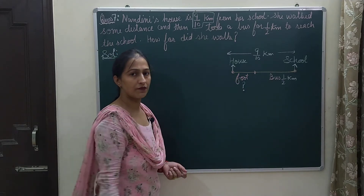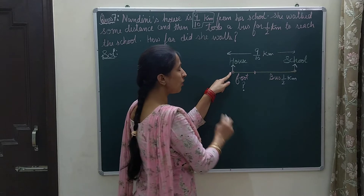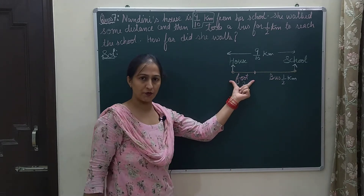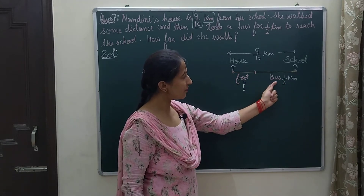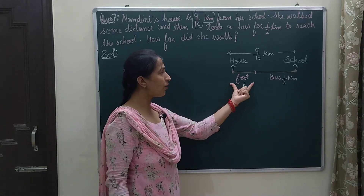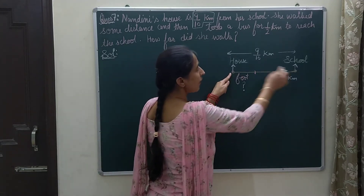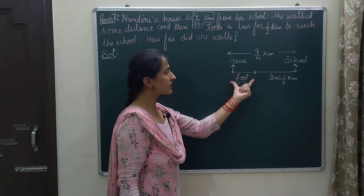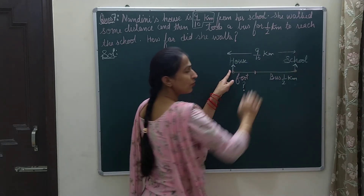This walking distance is not given to you. You are given the total distance from house to school, and you are given that she traveled some distance by foot and then by bus. The distance she traveled by bus is 1 by 2 kilometers. You can find the distance traveled by foot by subtracting the bus distance from the total distance.